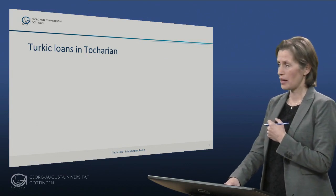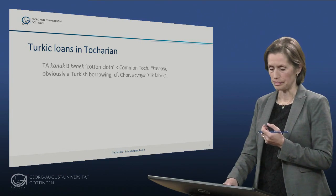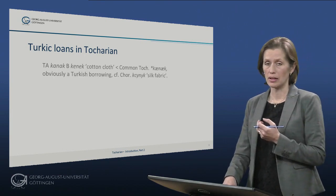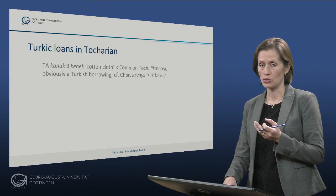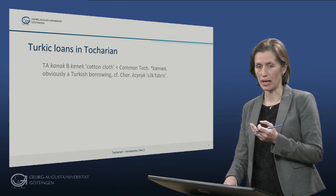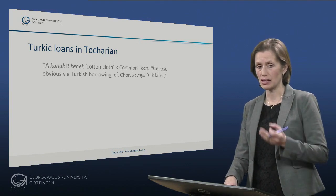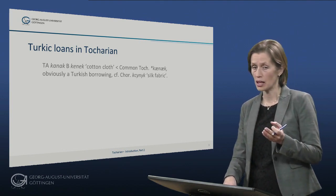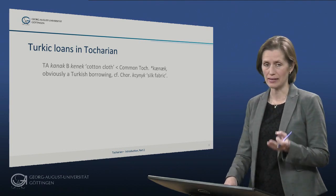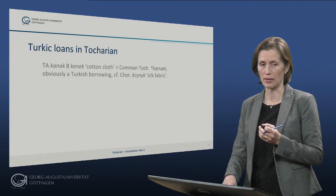We also have Turkic loans in Tocharian, and these Turkic loans are from a later stage than the BMAC loans. This indicates that the Tocharians came in contact with Turkic people later than they were in contact with the Iranians or early Indo-Aryans.